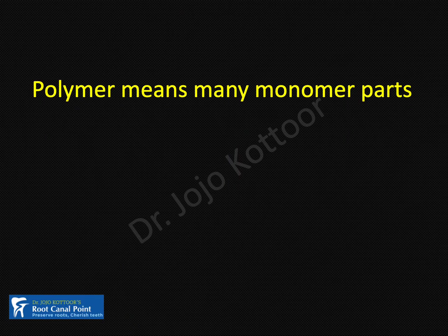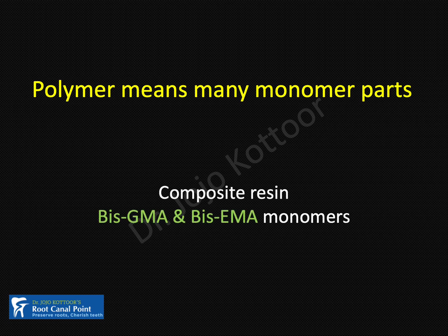First, let's discuss briefly about the polymerization process. Polymer actually means many monomers — multiple monomers combined together form a polymer. Majority of the dental composites, light-curable composite resins used in dentistry, use BIS-GMA as a monomer. Other than BIS-GMA, modern composites have BIS-EMA, TEGDMA, UDMA, and many more.